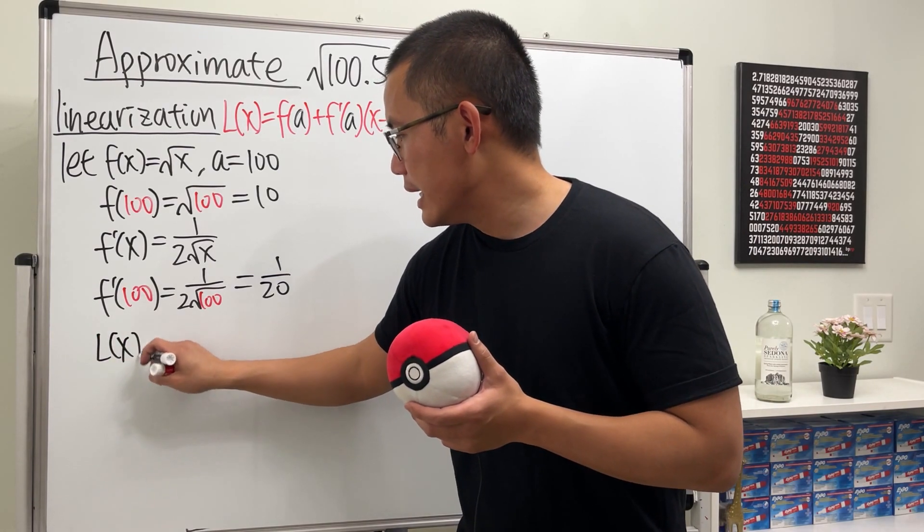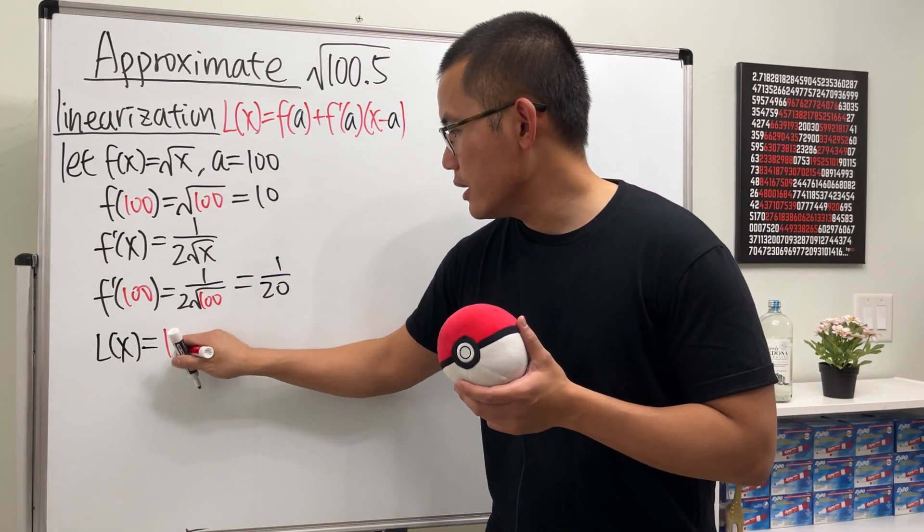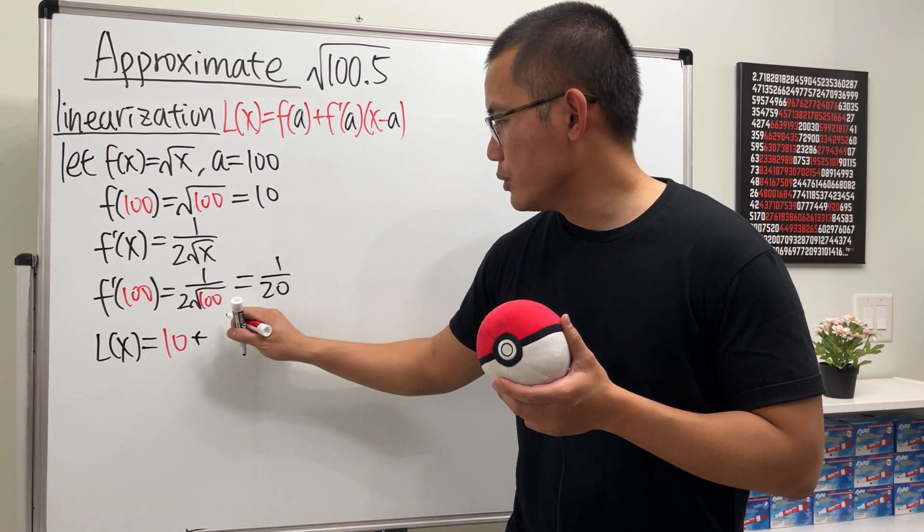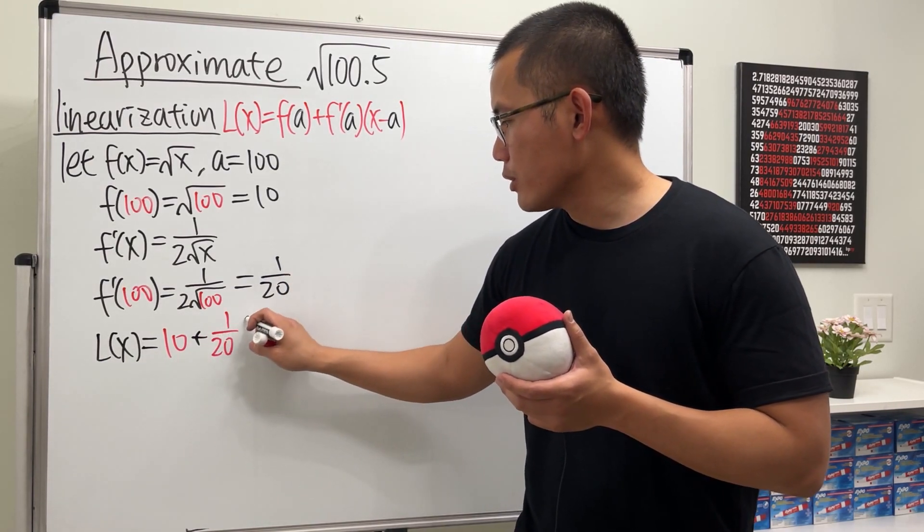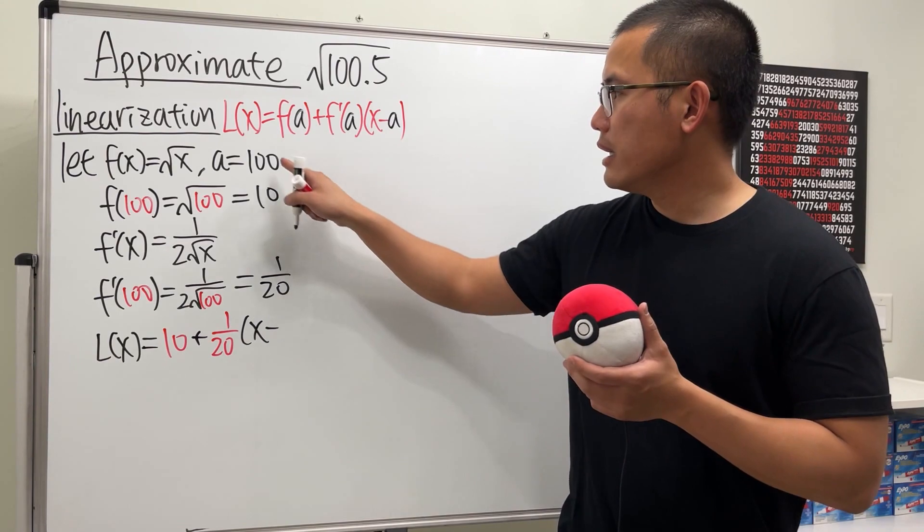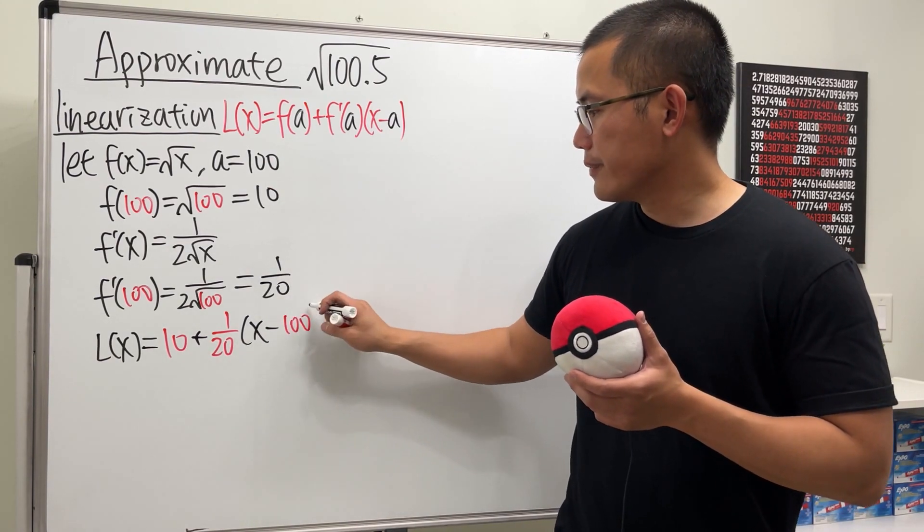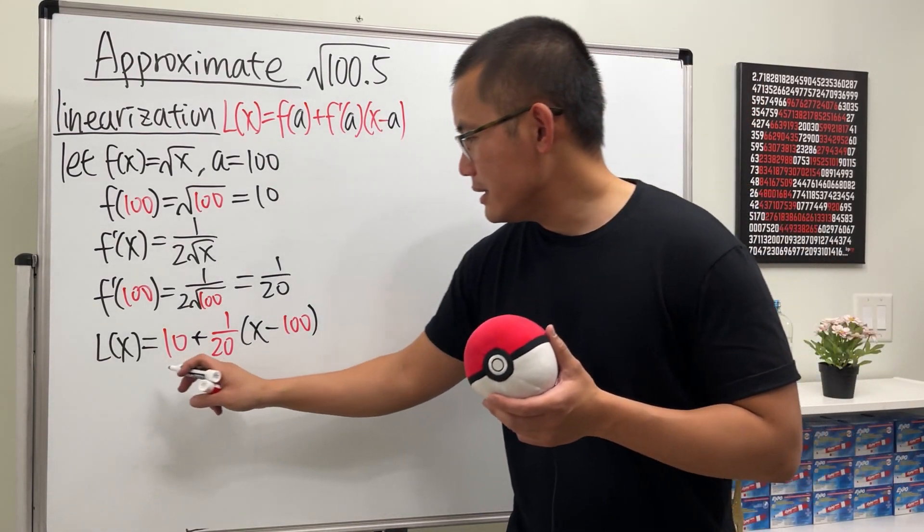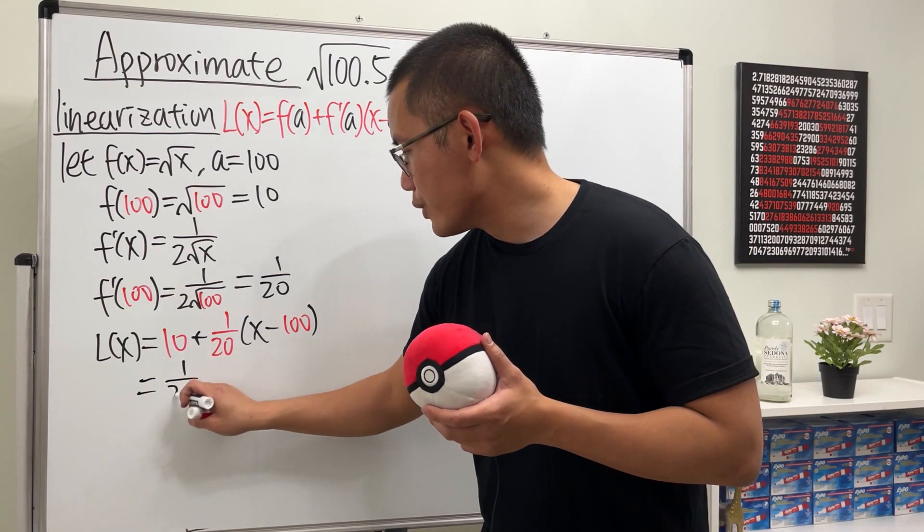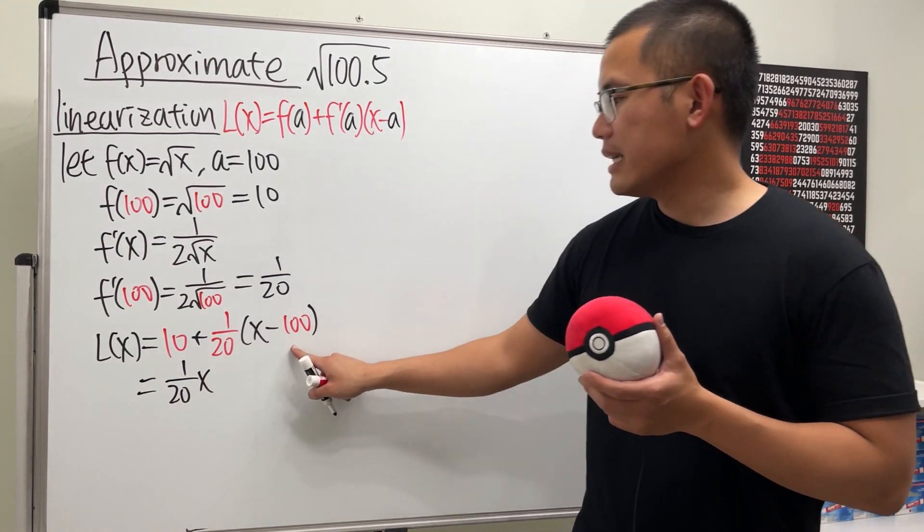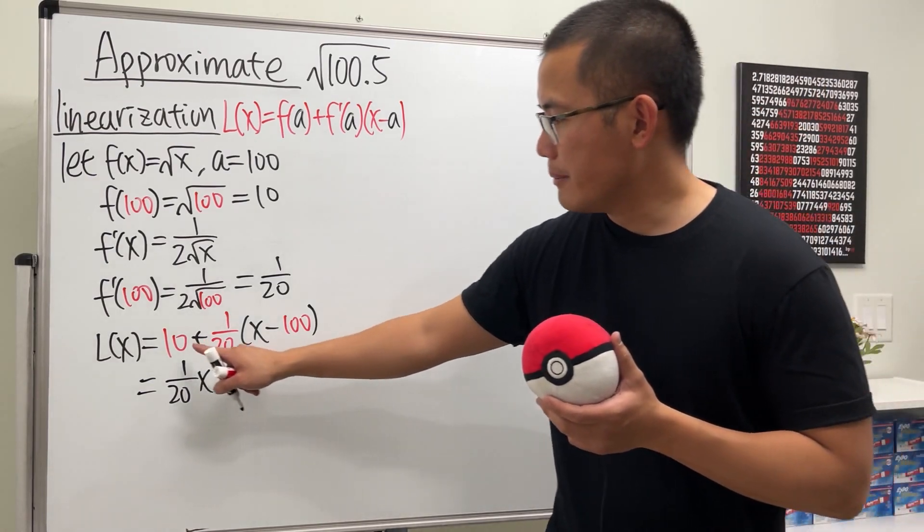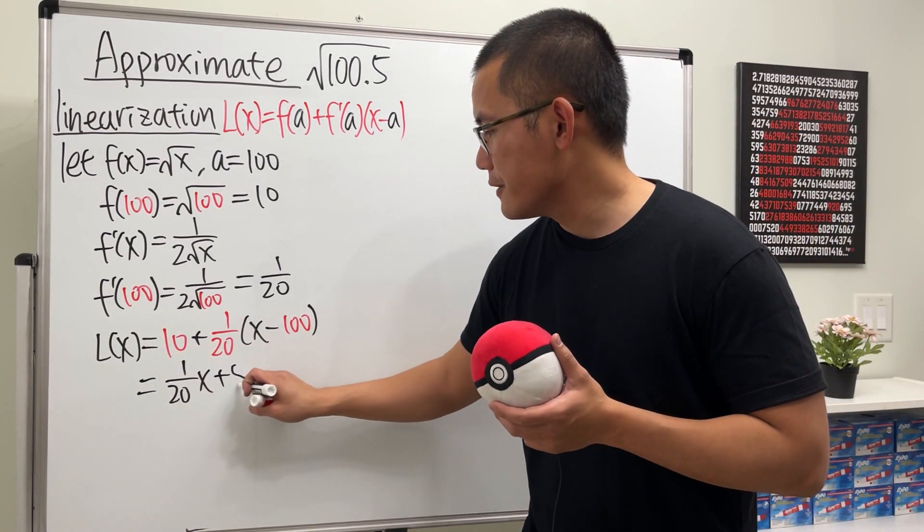And then just get the linearization. L of x equals the value of the function, and we add the slope, which is 1 over 20, and then multiply by x minus a, which is 100. This times is 1 over 20x, this times is minus 5, and then plus 10, so it's plus 5.